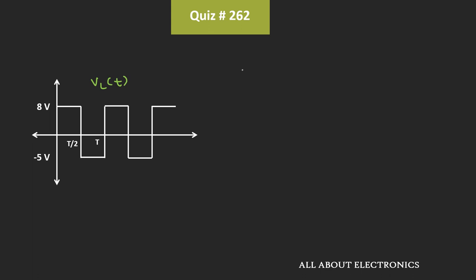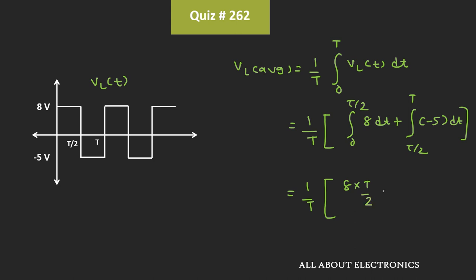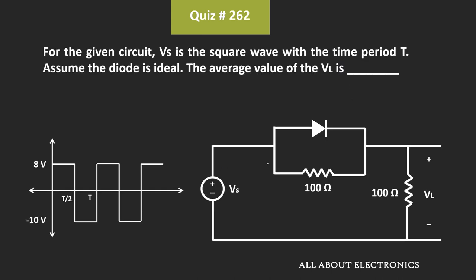Now let's find out the average value of this Vl. This Vl average can be given as 1/T times the integral from 0 to T of Vl(t) dt. Or we can say that it is equal to 1 over T times: from 0 to T/2, the output is 8V, while from T/2 to T, the output voltage is equal to minus 5V. Or from this we can say that it is equal to 1/T times (8 times T/2 minus 5 times T/2). And if we further simplify it, then it will come out as 3/2. Or we can say that the average value of this output voltage is equal to 1.5V. That means for the given circuit, the average value of the output voltage is equal to 1.5V.